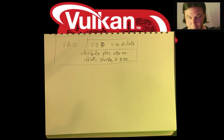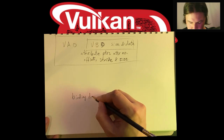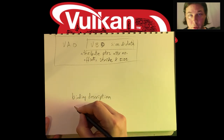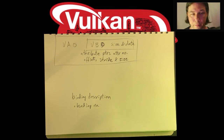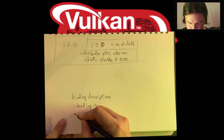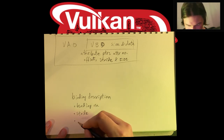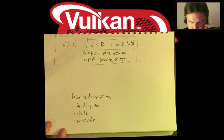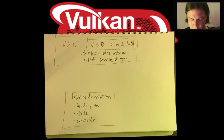The way we deal with this in Vulkan is analogous. We have what's called a binding description. For the binding description, we specify a binding number — for example, this vertex buffer is binding number zero, this storage buffer is binding number one, this texture sampler is binding number two, and so on. Then we have a stride, which is the number of bytes per vertex in total, and an input rate — whether this is per-instance or per-vertex data.